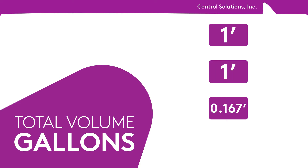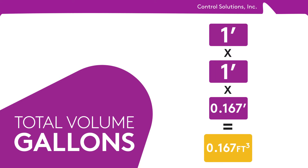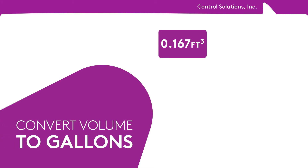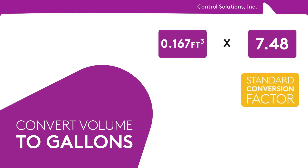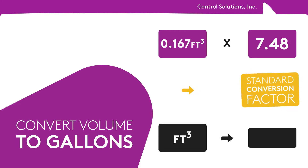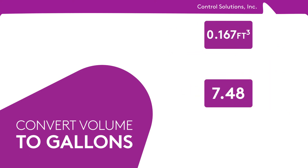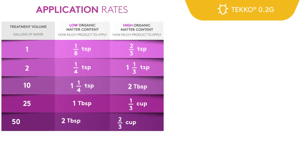To determine the total volume in gallons, multiply these numbers. So 1 times 1 times 0.167 equals 0.167 cubic feet. Then we need to convert this volume in cubic feet to gallons. To do this, multiply by a standard factor of 7.48 — the factor to convert cubic feet to liquid gallons. So 0.167 times 7.48 equals 1.25 gallons of water.